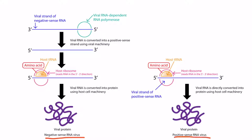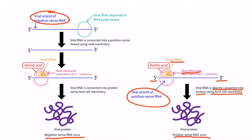Let's focus on the right first. A positive sense sequence of RNA means it's oriented in the five-prime to three-prime direction. This is important because host cell machinery, such as the host ribosome and host tRNA, only functions in the five-prime to three-prime direction. So the viral strand of RNA enters the host cell and is directly translated into protein using the host cell machinery. A negative sense RNA sequence is oriented in the three-prime to five-prime direction. Therefore, negative sense viruses cannot be directly translated into protein because the host cell machinery is incompatible with that orientation. This is why negative sense viruses have to bring along their own RNA-dependent RNA polymerases, which allow the virus to be converted into a positive sense strand oriented in the five-prime to three-prime direction.